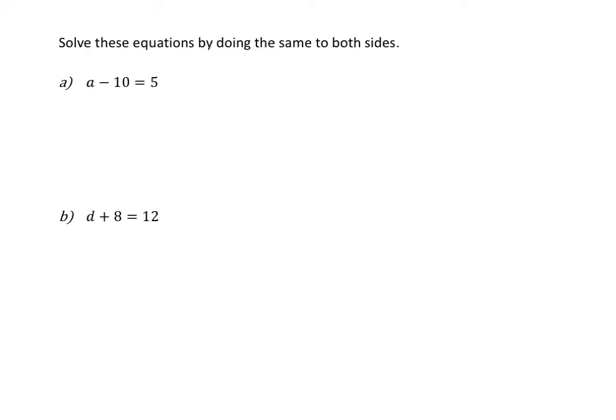In our first example, we want to solve the following equations by doing the same to both sides. The first one is: a minus 10 is equal to 5.